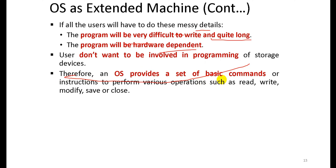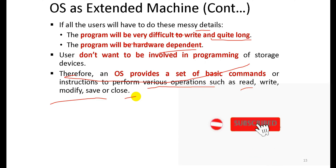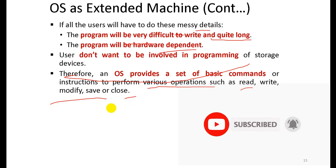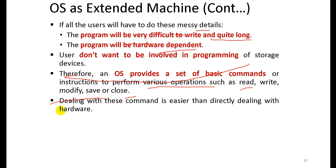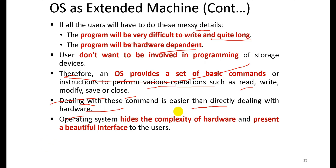Therefore, an operating system provides a set of basic commands and instructions to perform various operations such as read, write, modify, save, and close. The OS removes this complexity — it deals with hardware directly on behalf of the user and presents a clean, convenient interface, acting as an extended machine.